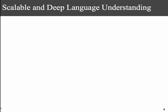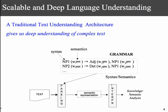In order to do this, the goal is to do scalable and deep language understanding. This was a traditional architecture for language understanding: you have a grammar that captures syntax and semantics at the same time, a parsing mechanism that takes the text using the grammar and produces a semantic representation, and then a semantic interpretation that produces the knowledge. This is the standard pipeline architecture. The problem was that most of these grammars were written by hand and applied for very limited domains.